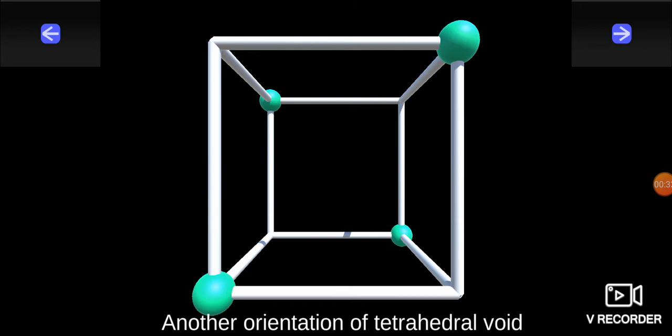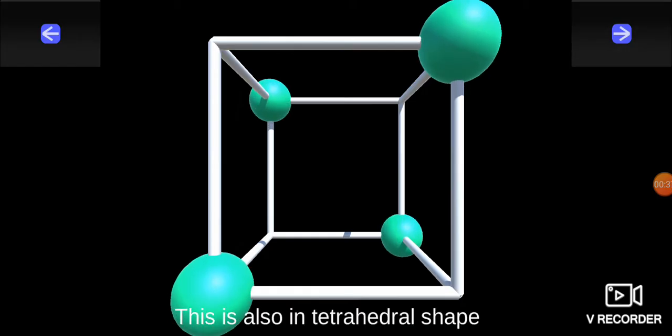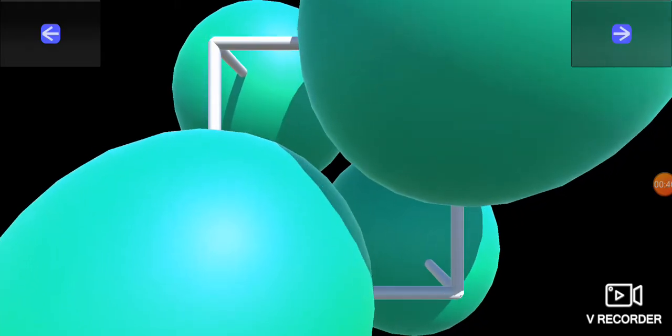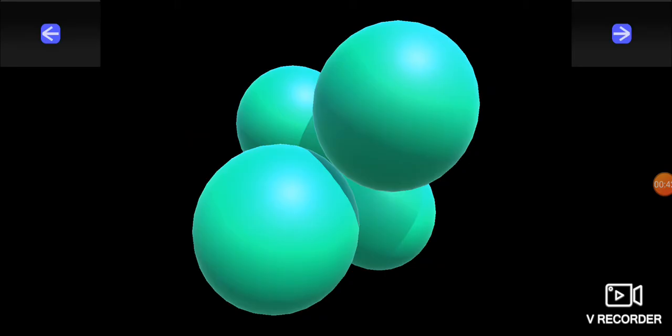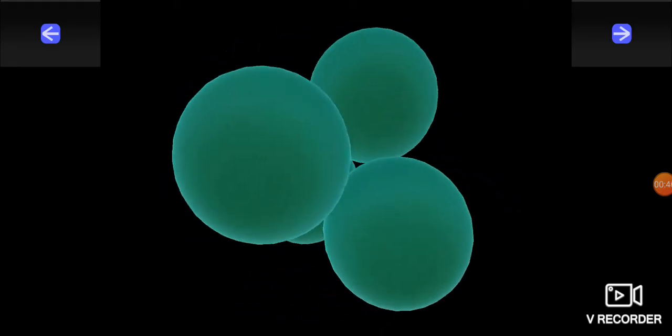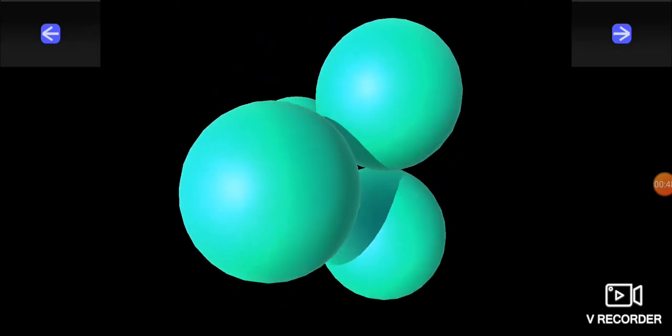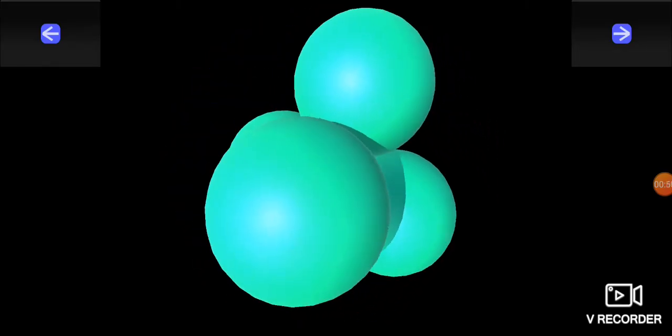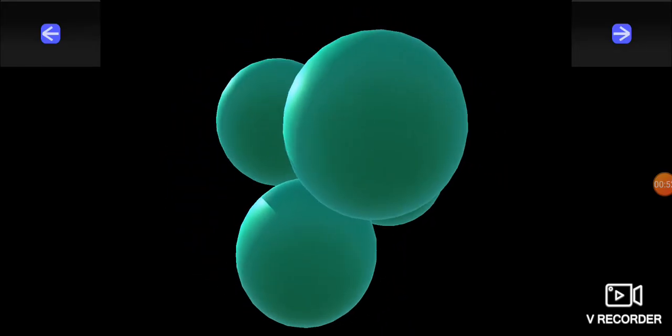Now, here you can see another orientation of tetrahedral void like this. All four atoms are combined. Here, the left space, a little empty space, is tetrahedral void again. This is another orientation of the tetrahedral void.